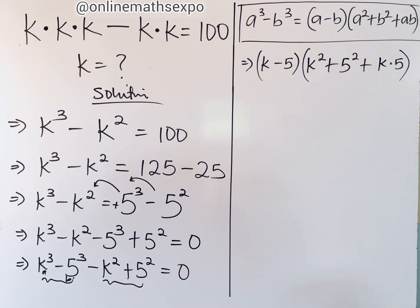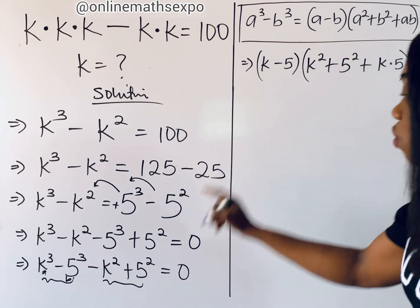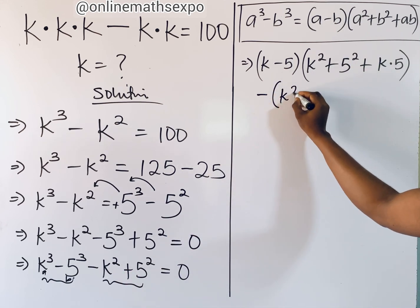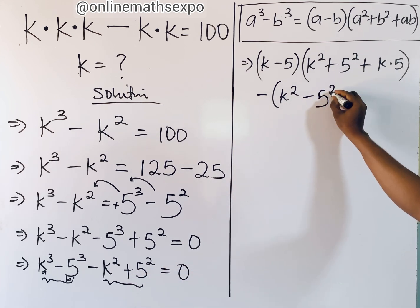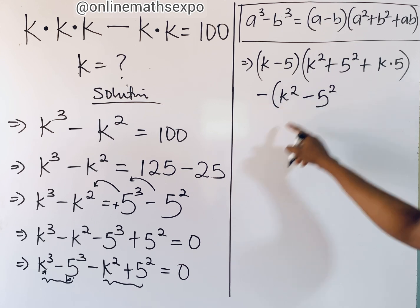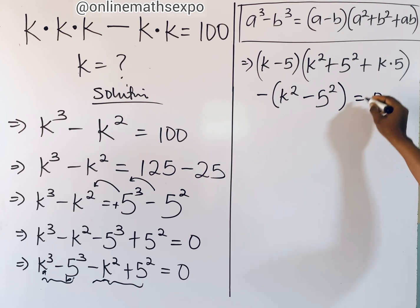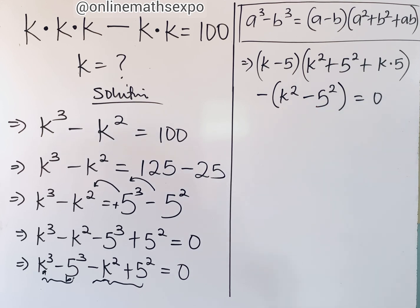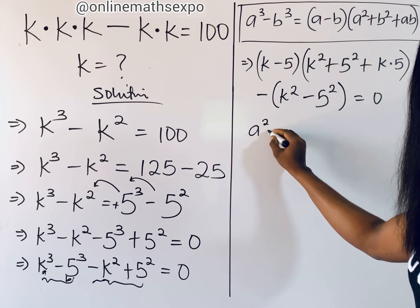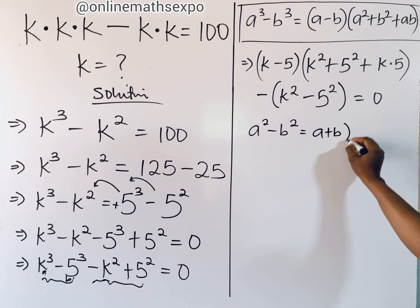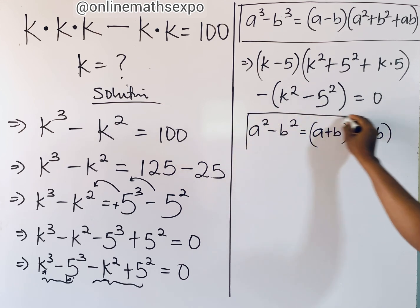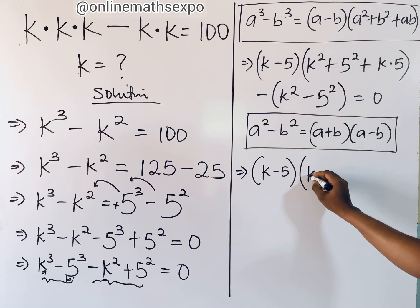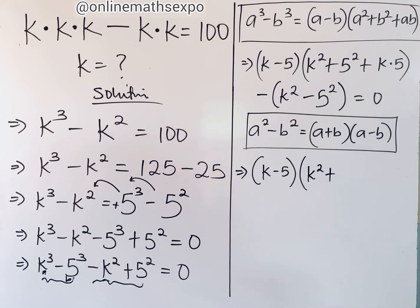Now for the -k² + 5² part, we factor out the negative sign to get -(k² - 5²). We can simplify k² - 5² using the difference of two squares: a² - b² = (a + b)(a - b). So this becomes -(k + 5)(k - 5). The full expression is now (k - 5)(k² + 25 + 5k) - (k + 5)(k - 5) = 0.